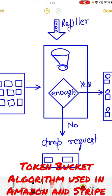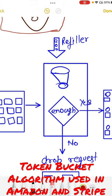We are discussing one of the rate limiting algorithms used in Amazon API and Stripe API. This is called the token bucket algorithm. In this, what happens is that you maintain a bucket with a fixed size and you keep refilling it with tokens.